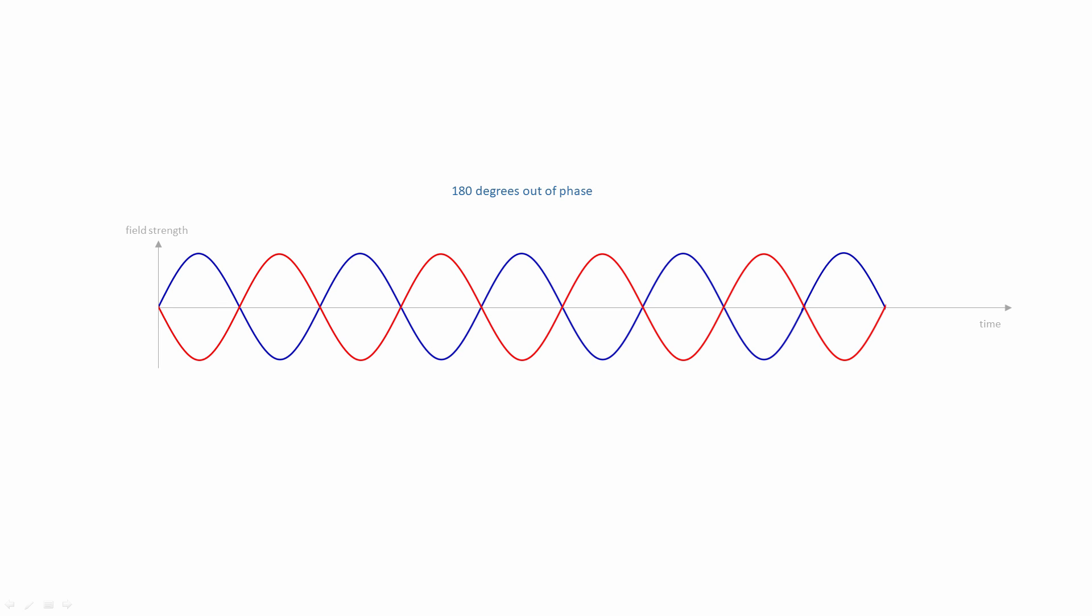Here are two waves whose oscillations differ by half a cycle. They are half a cycle out of sync. You can think of the difference as half a rotation of the circle that you saw earlier. So we say that these waves are 180 degrees out of phase.